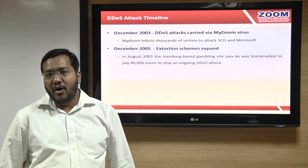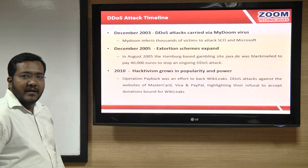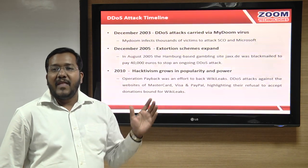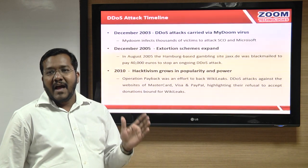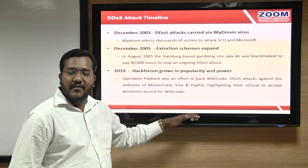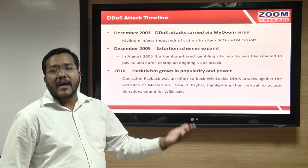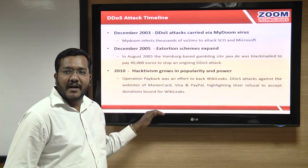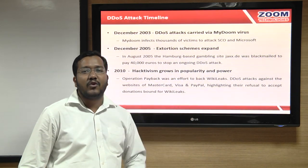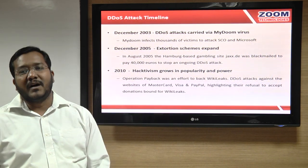In 2005, a gambling website was blackmailed for extortion money to stop DDoS attacks. In 2010, a very famous incident occurred during the WikiLeaks episode, where the Anonymous group of hackers brought down MasterCard, PayPal, and Visa websites. Nobody was able to make payments in the US because those servers were down. They used a tool called LOIC to bring down these servers.